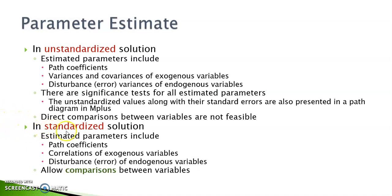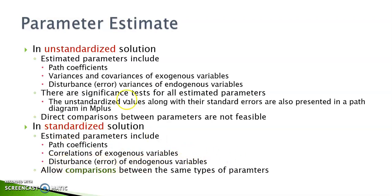If we are working with a standardized model, the parameters that we need to estimate include path coefficients, the correlations between those exogenous variables, and the disturbance of the endogenous variables. One advantage of a standardized model is the feasibility to make comparisons between parameters of the same kind.